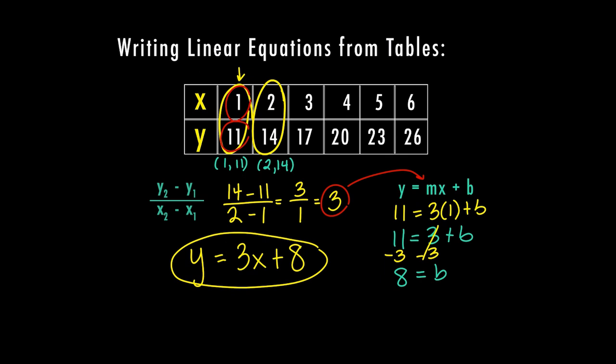So let's say I take this ordered pair up here, (4, 20). I can plug in a 4 for x. I'm going to solve, and my answer should be 20. So 4 times 3 is 12, 12 plus 8 is 20. And that will work for any number in the table, as well as any number beyond the table.